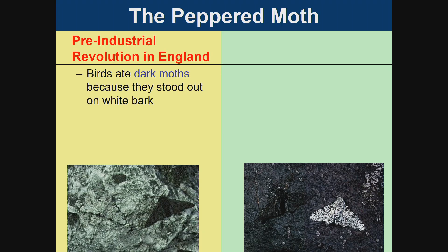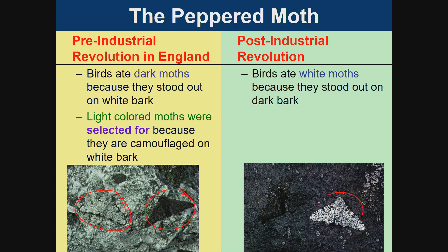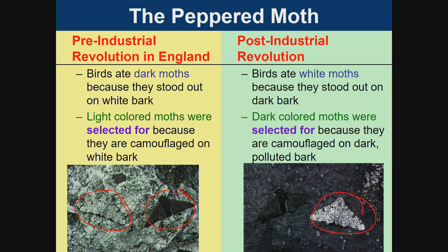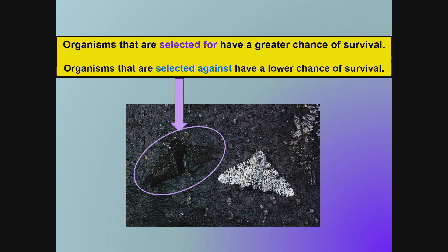The peppered moth is an example of evolution that happened in a short period of time. Pre-Industrial Revolution in England, birds ate the dark moths because they stood out on the white bark — light-colored moths were selected for because they were camouflaged. Post-Industrial Revolution, birds ate the white moths because they stood out on the dark, polluted bark — now the dark-colored moths were selected for because they were camouflaged on the dark bark. Organisms selected for have a greater chance of survival; organisms selected against have a lower chance of survival.